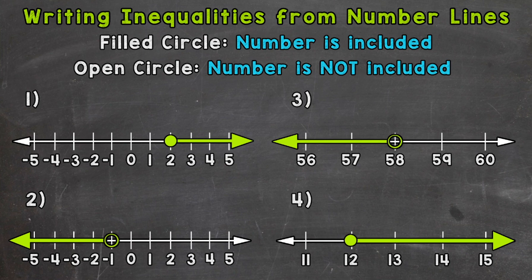In number one, we have a filled circle above two, so we know two is going to be included in our solutions. We have an arrow pointing to the right, which means any number greater than two is going to be a solution as well. The arrow represents the infinite amount of solutions for numbers greater than two. So we use x to represent our solutions, and x is going to be greater than or equal to two.